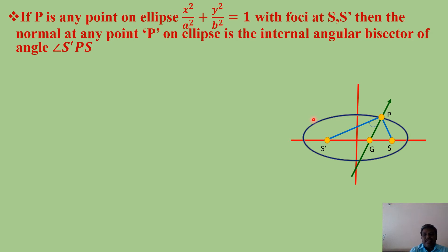Internal angular bisector means the angles on both sides must be equal. The angle S'PG and angle GPS must both equal θ. To show the normal is the internal angular bisector of angle S'PS, it is enough to show that S'P/SP = S'G/GS. If that ratio holds, the two angles are equal and our problem is done.